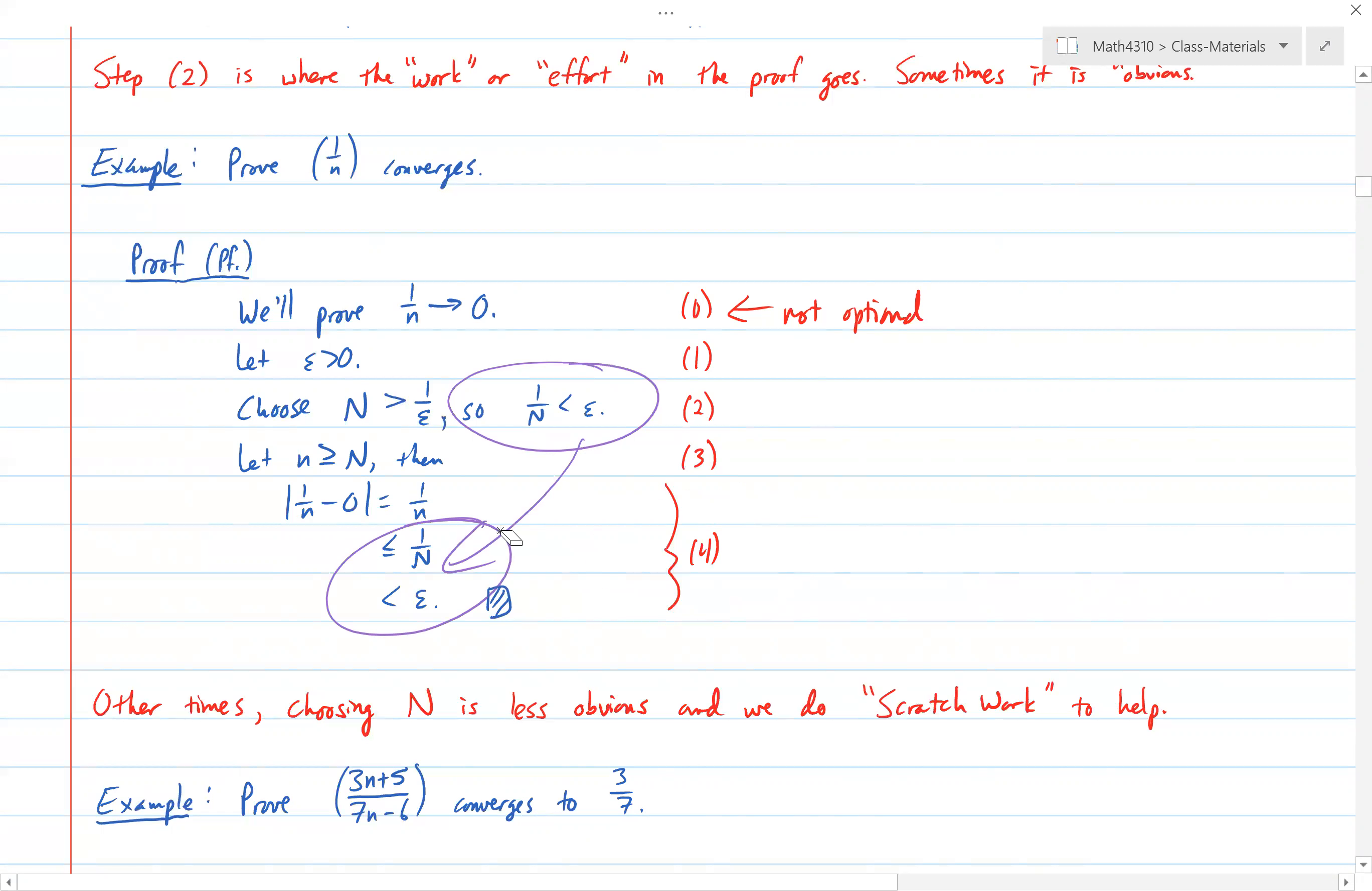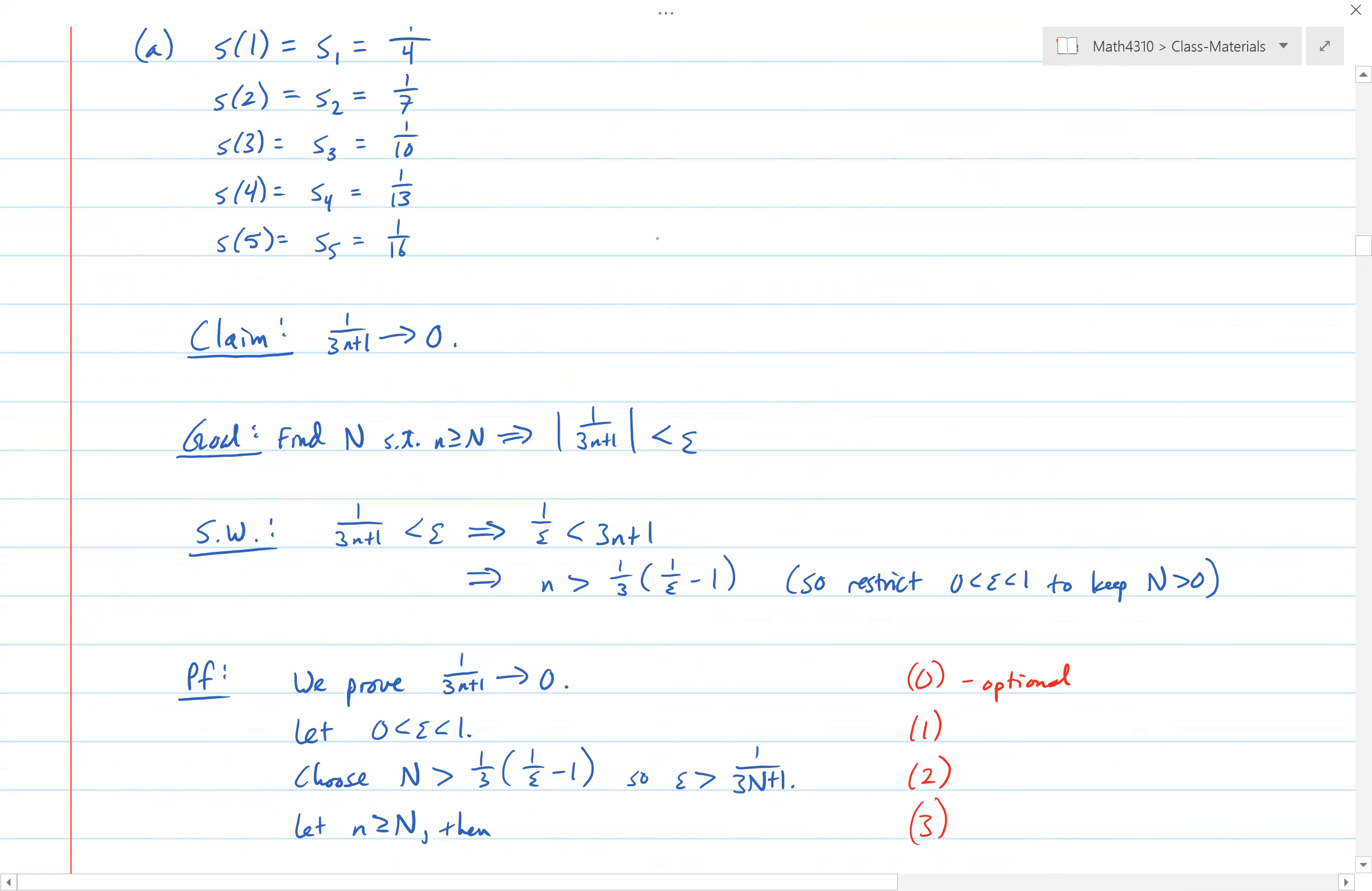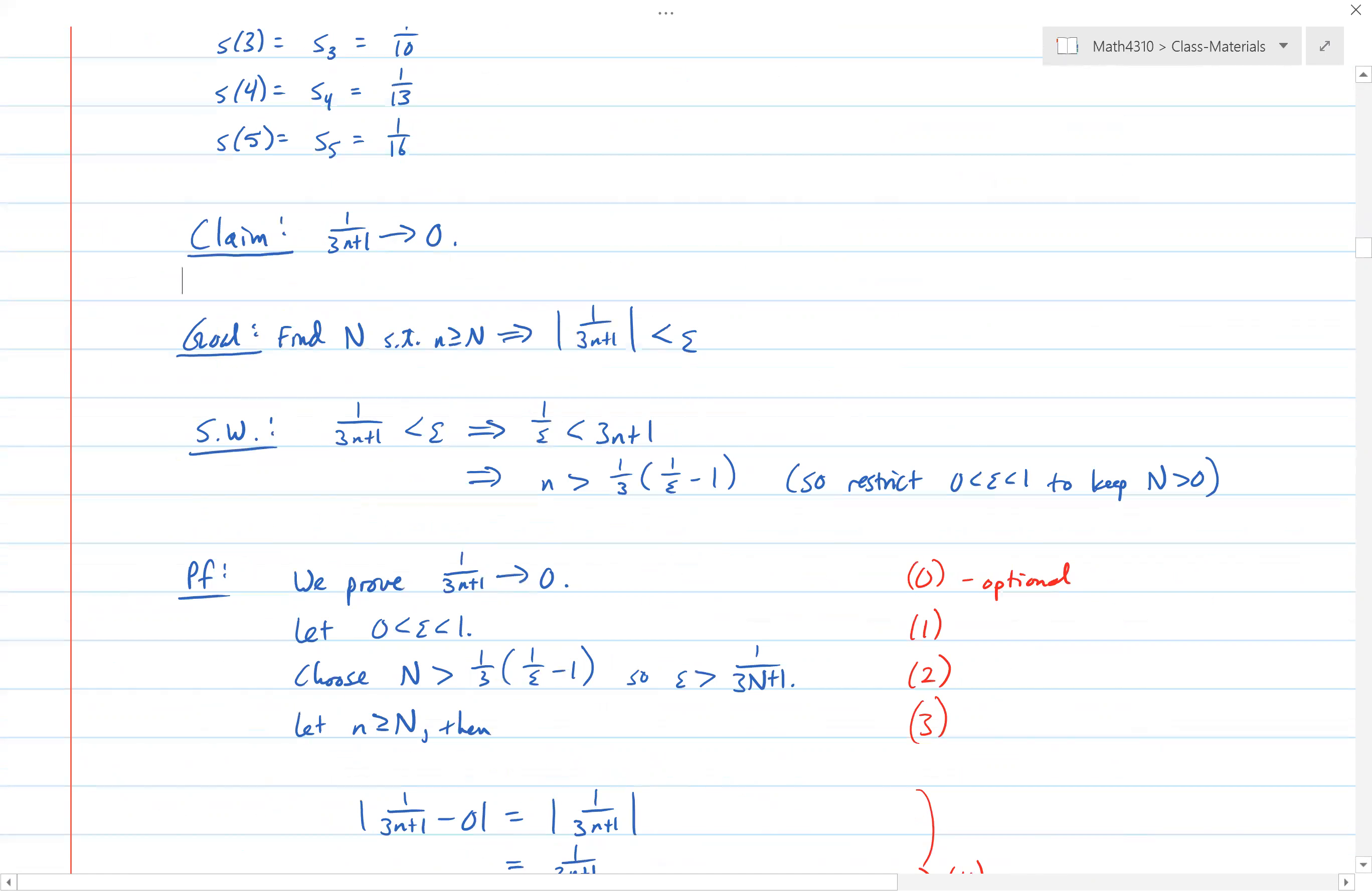There was this typo in this other example, but I'm not going to go over it. There's just these steps. Then we worked through some other examples. We showed, for instance, like one over three n plus one converges to zero. And we did our scratch work. And this is where we found, for instance, in the scratch work, that since we're only considering these indices of our sequence.